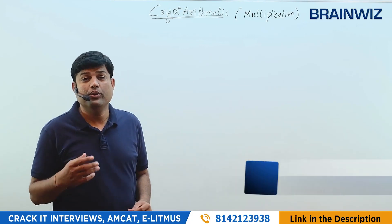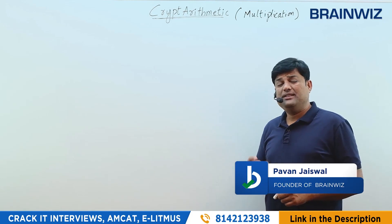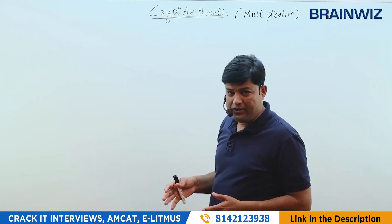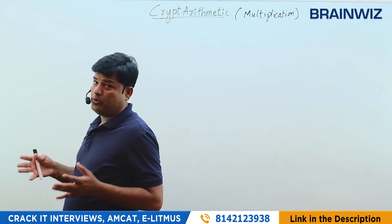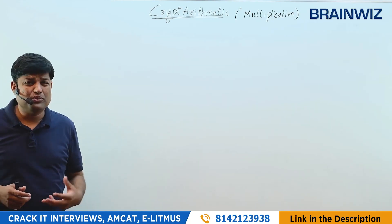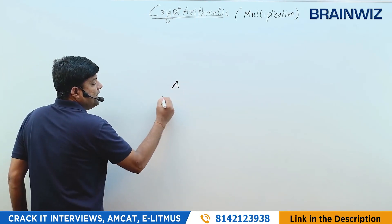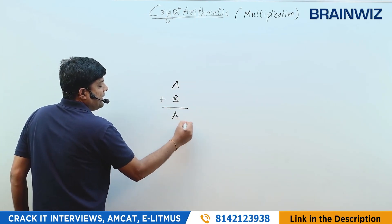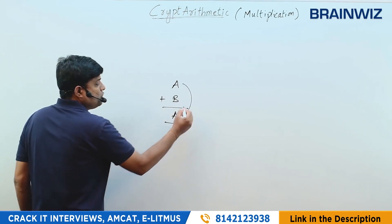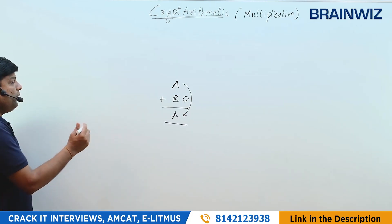Let's go into cryptarithmetic multiplication. We have done a couple of questions on the basis of additions, now we are going into cryptarithmetic multiplications. Multiplications are similar to additions but require a bit of product logic. From the previous sessions, recall that A added with B gives A back, which means B has to be 0. That is okay in case of addition.